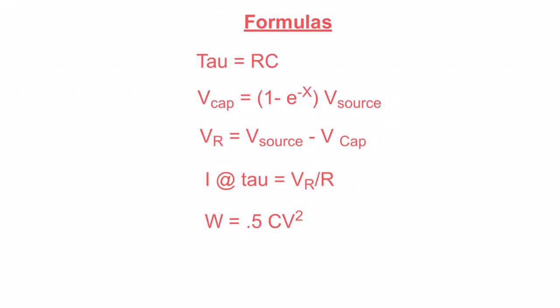So we're taking the resistance, we're multiplying it by the capacitance to get the tau, or the time constant. Then we have to remember we take 5 of those. 5 times tau equals the time it takes to fully charge that capacitor.